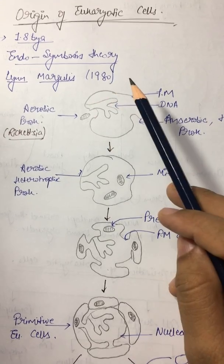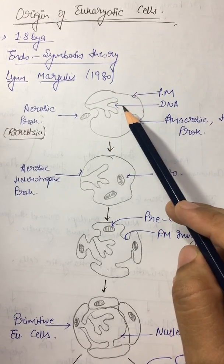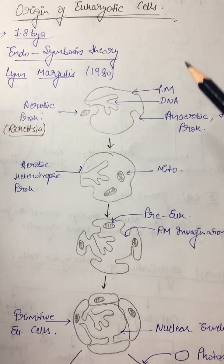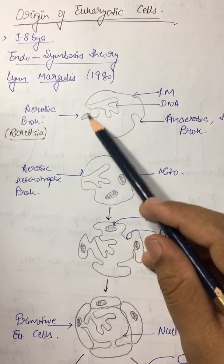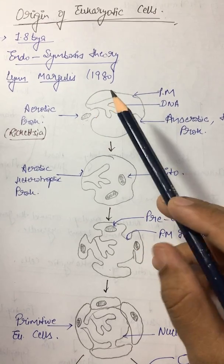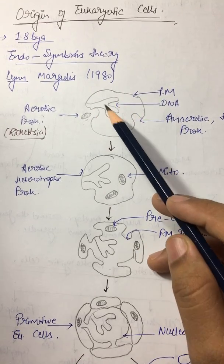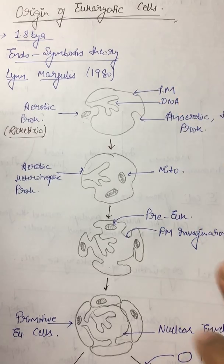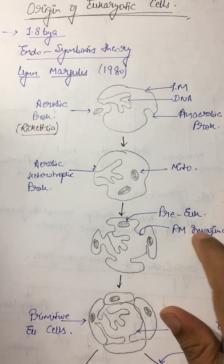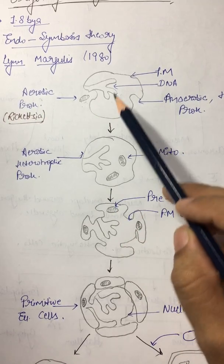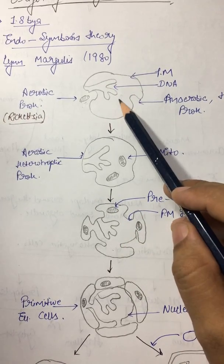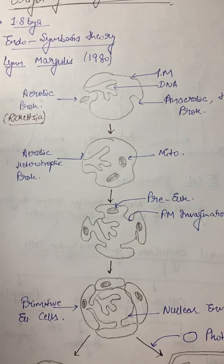And they developed a symbiotic relationship in which the small prokaryote will provide surplus ATP and the host cell will provide food and protection. When the small prokaryote found permanent residence inside the primitive prokaryotic cell, invagination of plasma membrane took place which led to the formation of nuclear envelope.